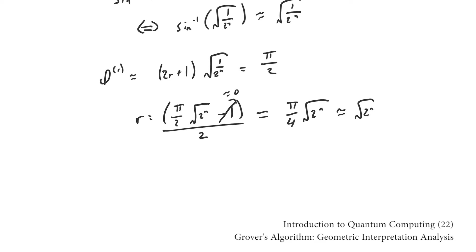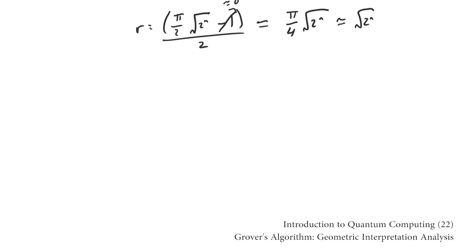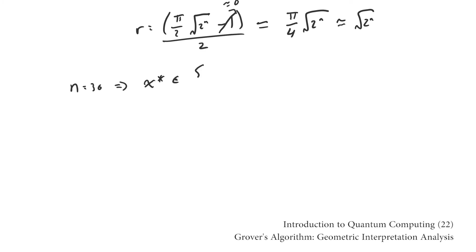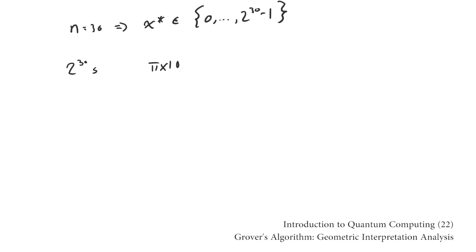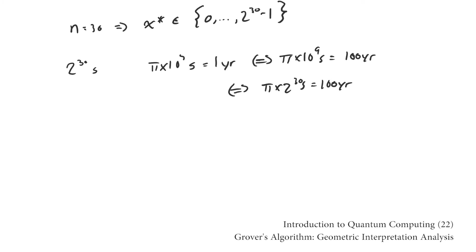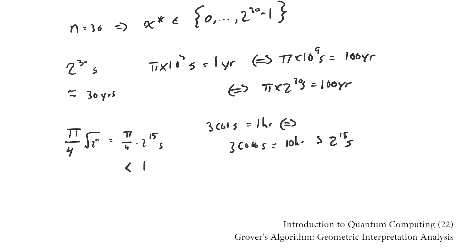So Grover's algorithm only requires √(2^n) queries to the Oracle, whereas the best we can do classically is 2^n queries. To get an appreciation for the difference, consider the case where n equals 30 and each query to the Oracle takes one second. The classical algorithm would take around 30 years, whereas Grover's algorithm would be done in less than 10 hours — it's the difference between working one day and working every day of your life.